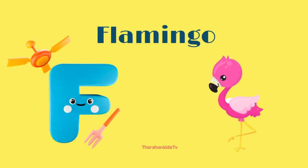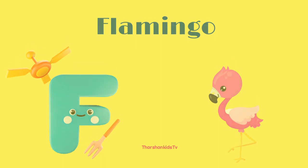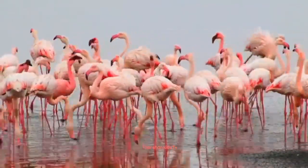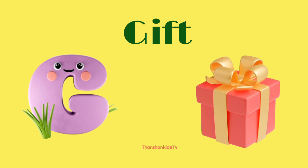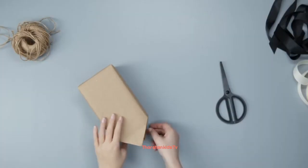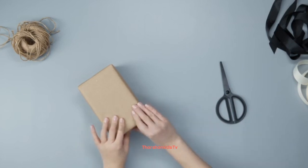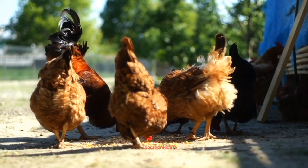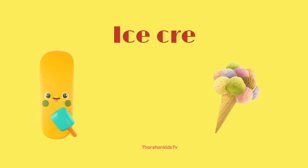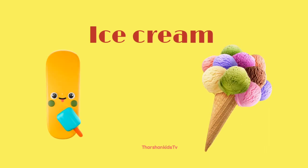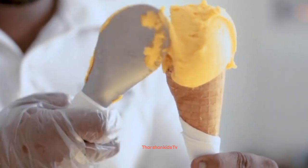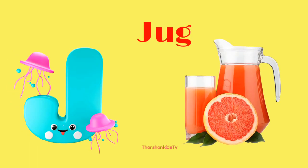F for flamingo. G for gift. H for hen. I for ice cream. J for jug.